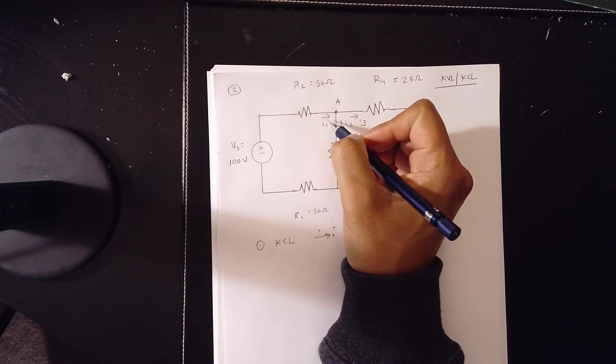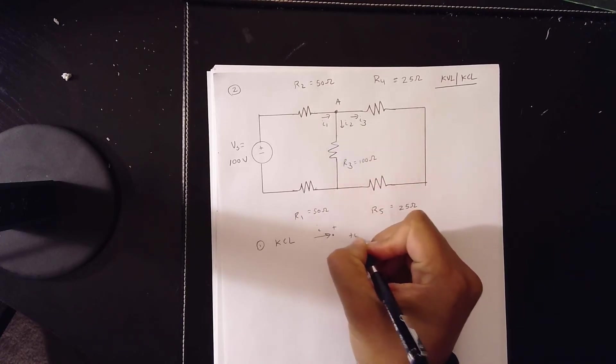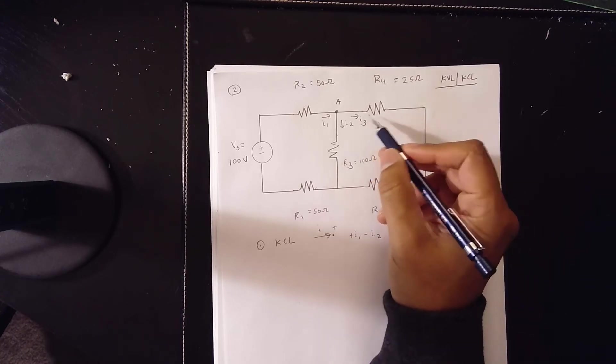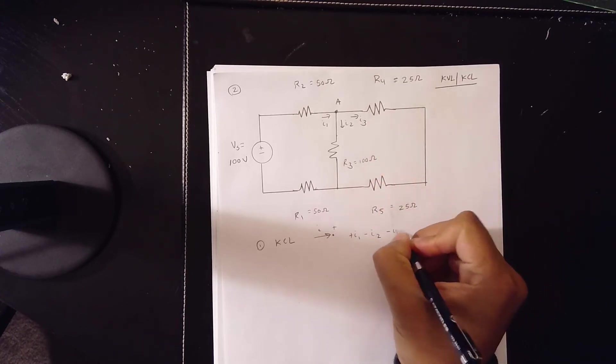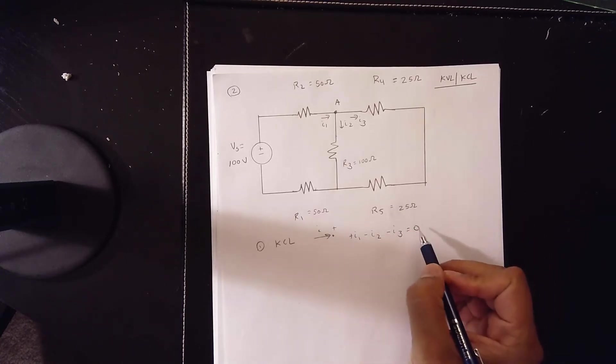So the first thing you're going to have is I1, I2, I3. So is I1 coming into the node? Yes, plus I1. I2 going out of the node? Yes, minus I2. Is I3 going out of the node? Yeah, minus I3 is equal to zero. That's your equation one.